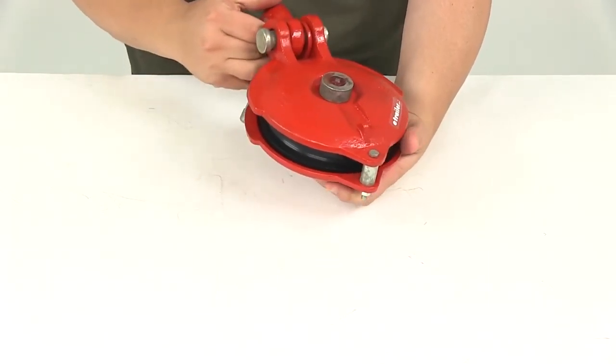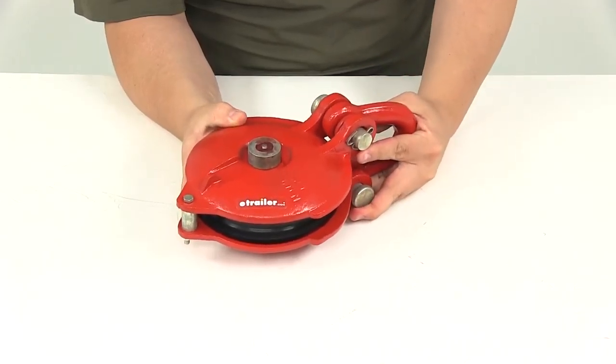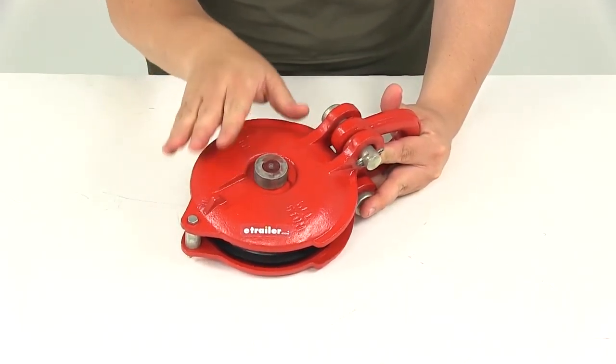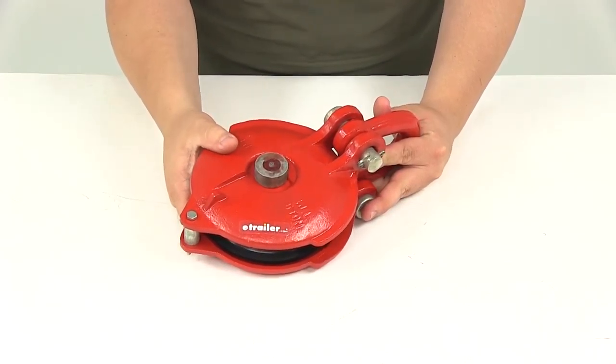This is going to offer a brake strength of 30,000 pounds with a working load limit of 12,000 pounds. Again, the pulley block is going to have the cast iron housing with a nice red powder coat finish.